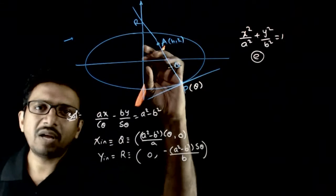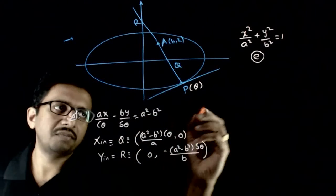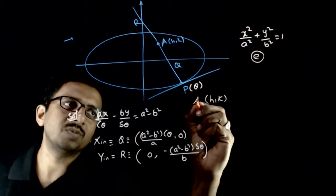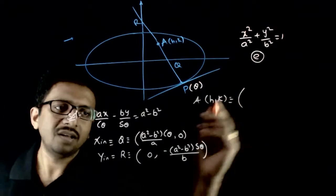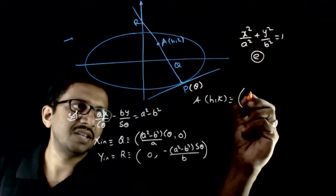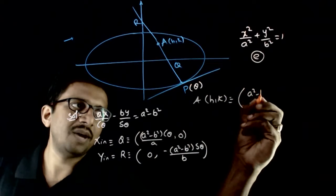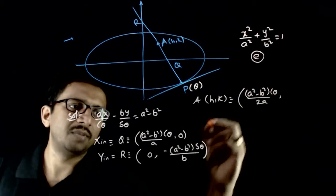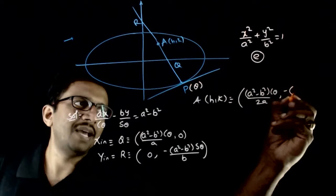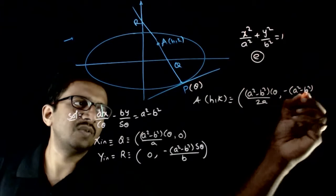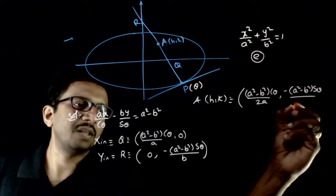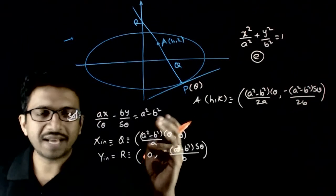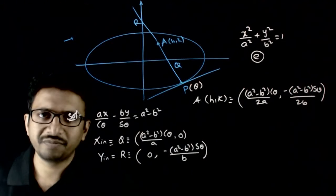Now, the locus point is the midpoint of QR. So h, k — my locus point (h, k) — is the midpoint of these two points. That is, h = (a² - b²)cosθ / 2a and k = -(a² - b²)sinθ / 2b, using the midpoint formula (x₁ + x₂)/2, (y₁ + y₂)/2.